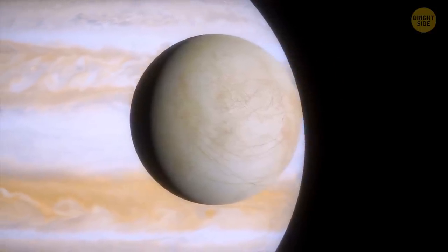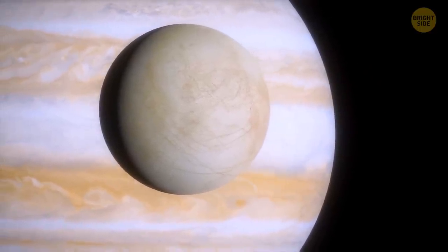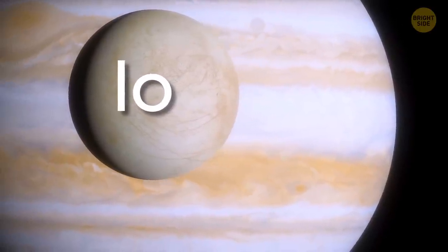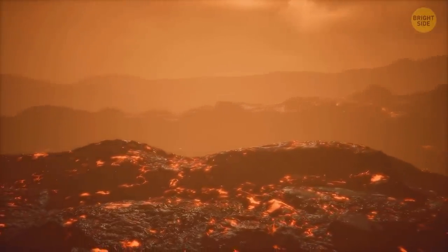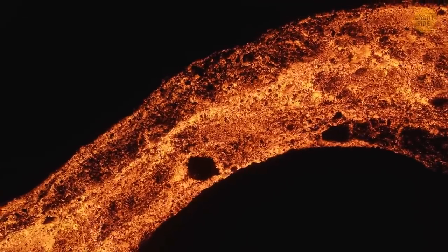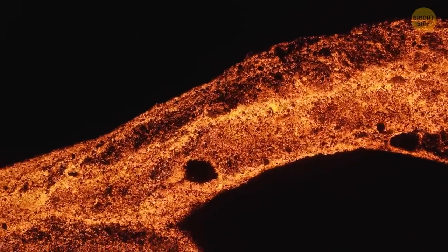Europa is not the only moon where this is happening. Another of Jupiter's moons, Io, is also warm because of such tidal forces. Io also has volcanoes erupting from within all the time. So it's not only that the sun warms the space bodies and pumps them with energy.